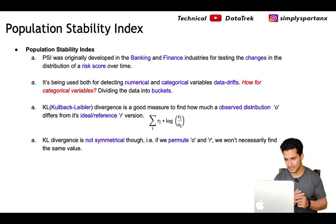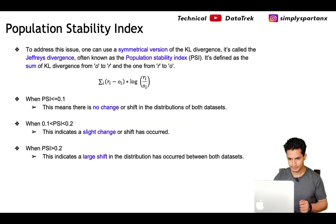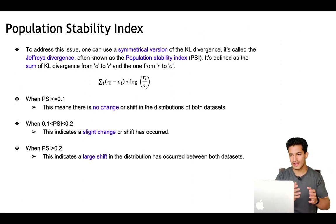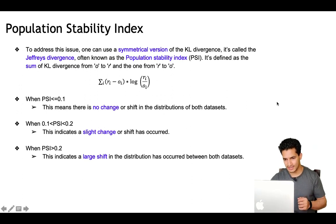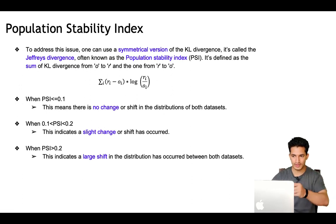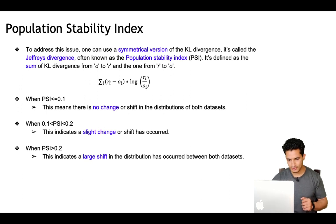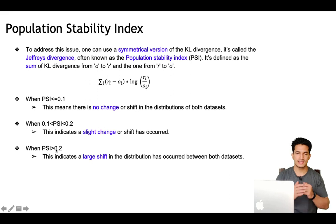One problem with KL divergence is that it is not symmetric — if we permute the observed and reference distributions, we won't necessarily find the same value. To address this, one can use a symmetric version of KL divergence, also called Jeffrey's divergence. Jeffrey's divergence is nothing but the Population Stability Index: it is the sum of KL divergence from observed to reference and from reference to observed. The thresholds are: PSI ≤ 0.1 means no change; PSI between 0.1 and 0.2 indicates slight change; PSI > 0.2 indicates a large shift in the distribution.